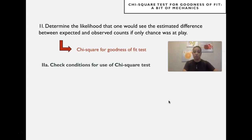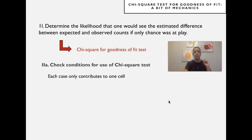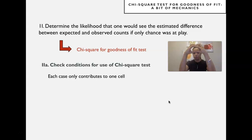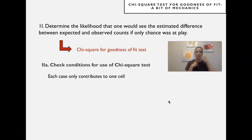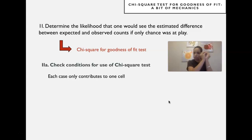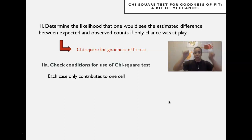Before we run the chi-square test, we should check the conditions that allow us to assume these differences will be distributed as chi-square under random conditions. These are simple. Each case only contributes to one cell in the table — one cell for white jurors, one for black jurors, one for Hispanic jurors. The same person cannot be in the white cell and the black cell at the same time. If a mixed-race category exists, the person would be counted there, not twice. If the same person is counted twice, it does not meet the conditions to run a chi-square test.